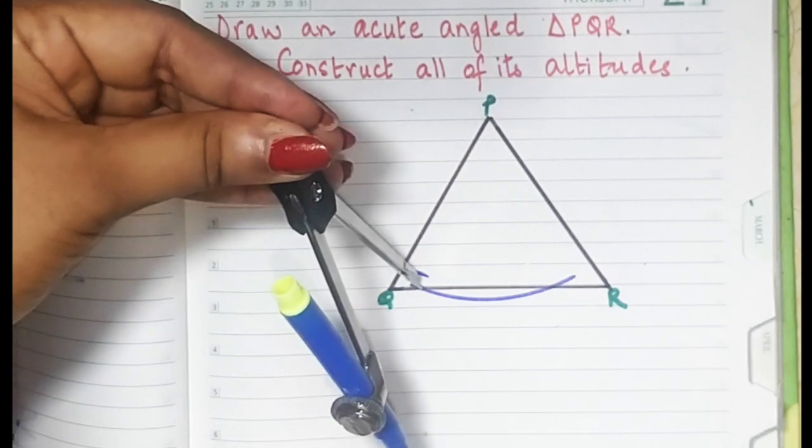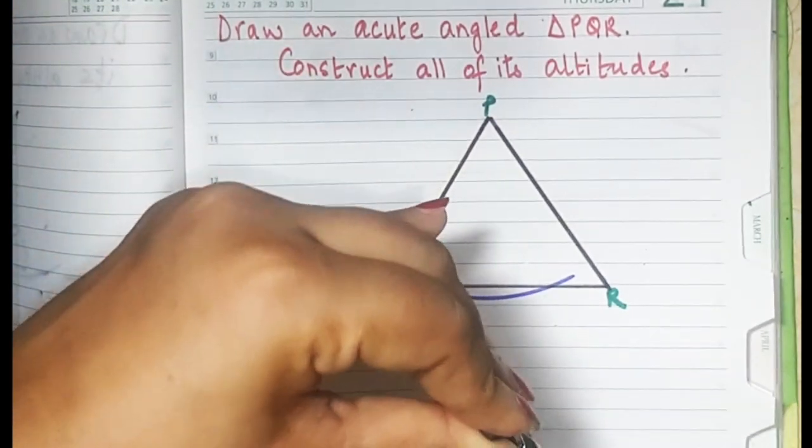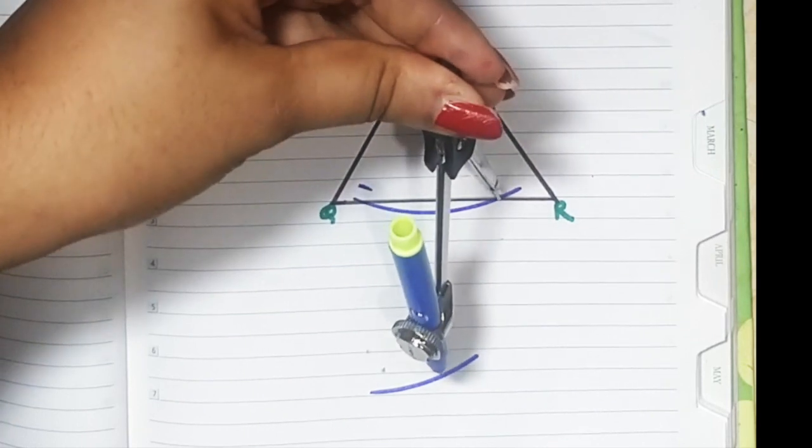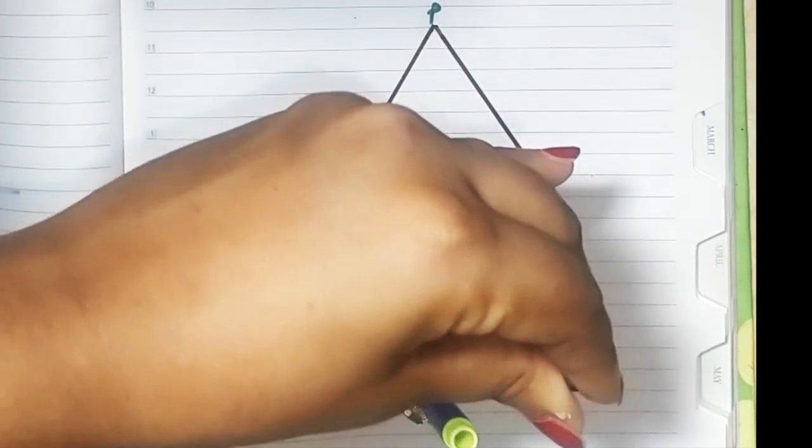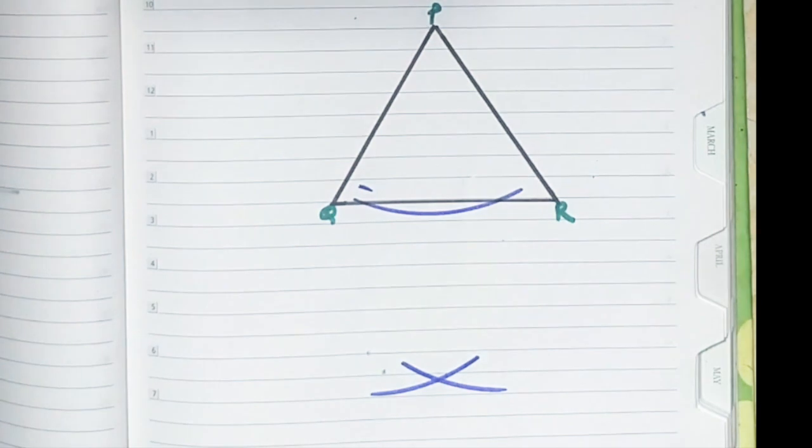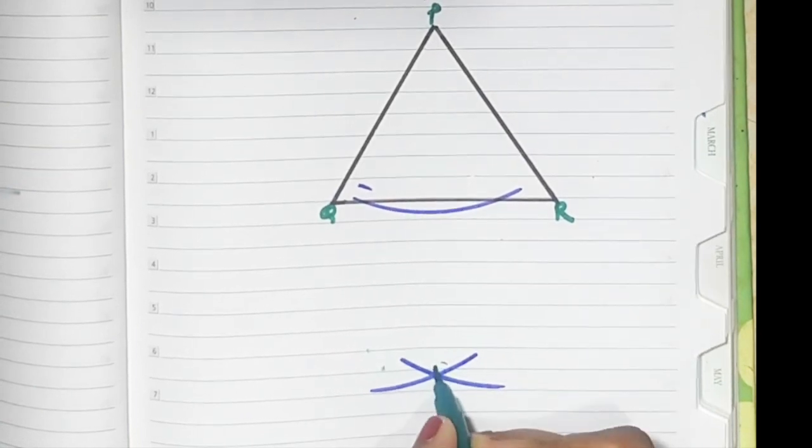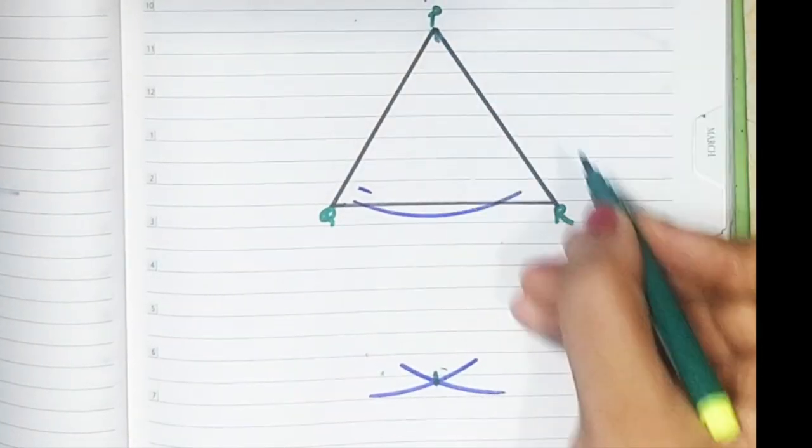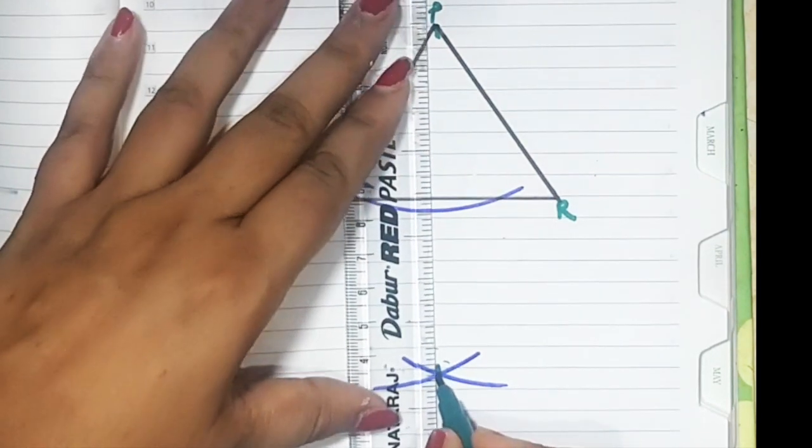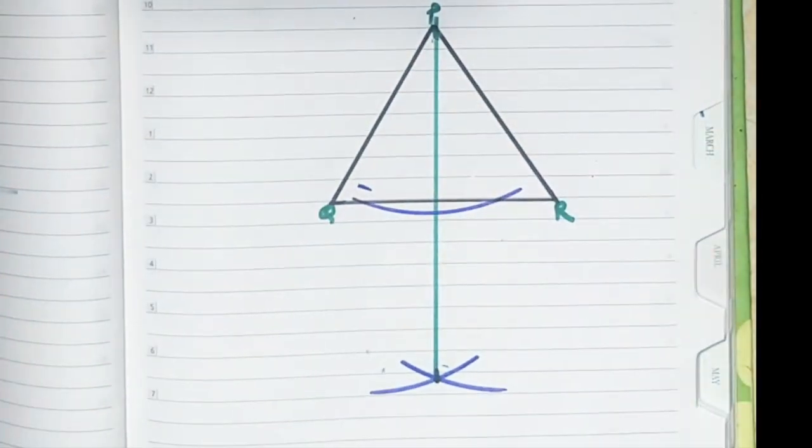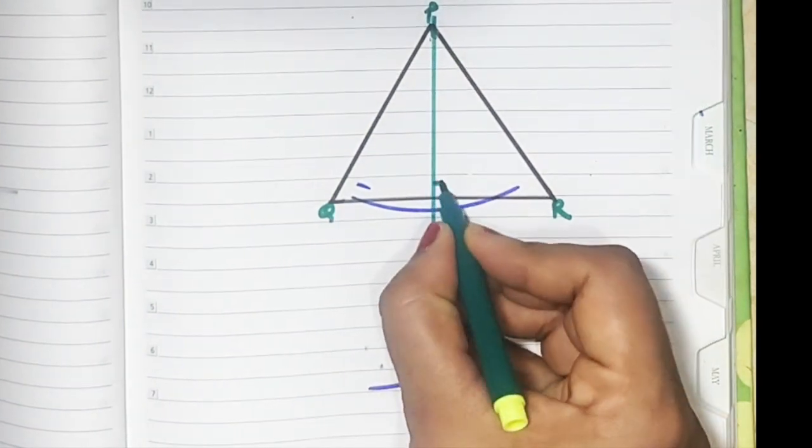After drawing a smiling face, draw an arc, cut that arc. Now what you have to do is you have to join. Join this point to P. This is your altitude.